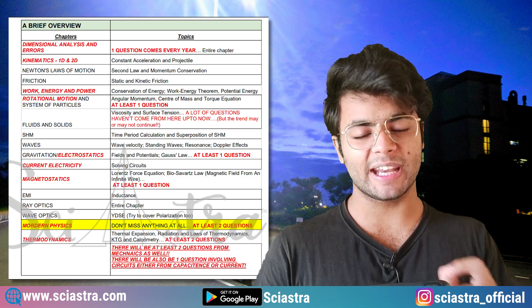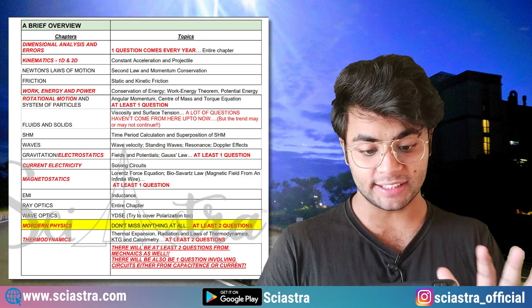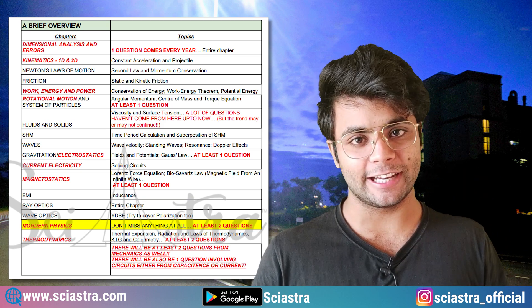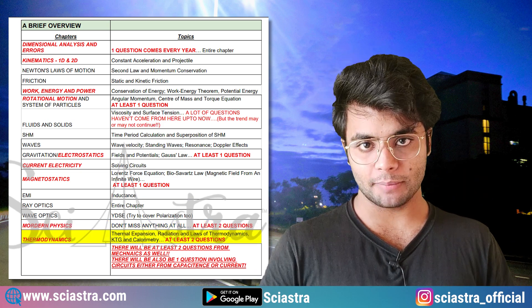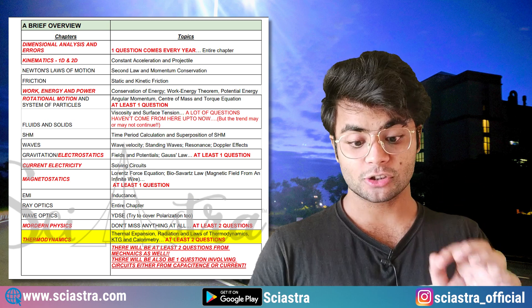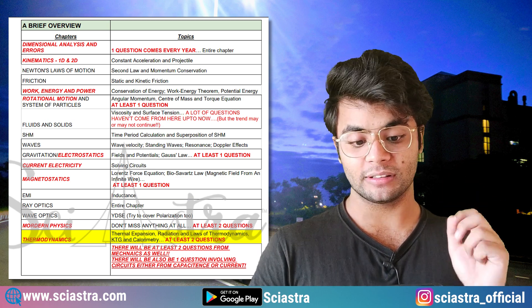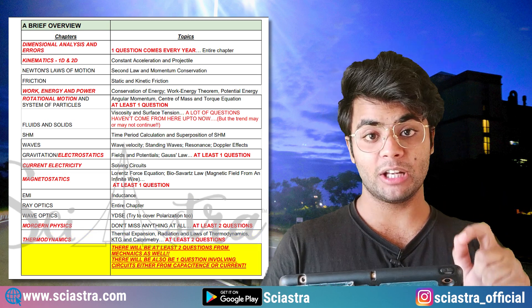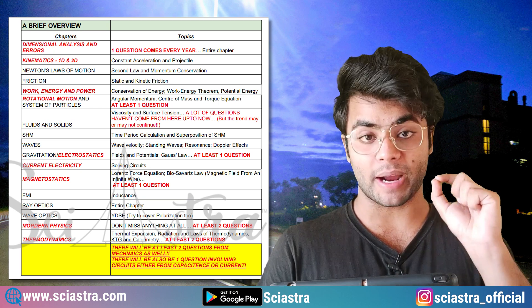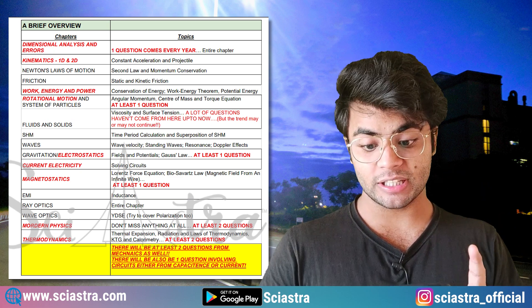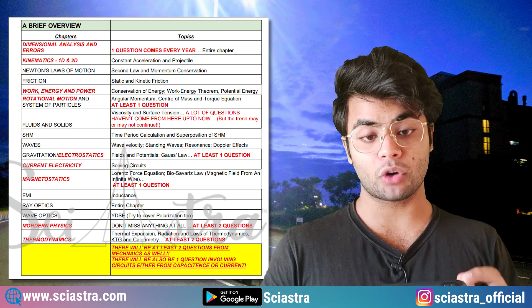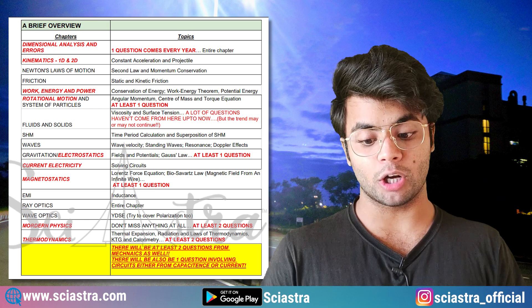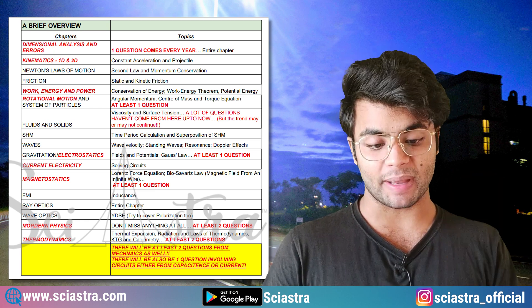Modern physics is a very important chapter — don't miss anything at all. It is also a very easy chapter, with at least two questions almost guaranteed. Then comes thermodynamics — at least two questions almost guaranteed — based on thermal expansion, radiation, laws of thermodynamics, kinetic theory of gases, and calorimetry. There will be at least two questions from mechanics and one question involving circuits, either from capacitance or current electricity.